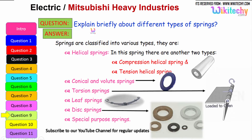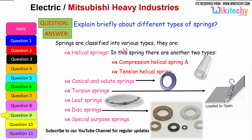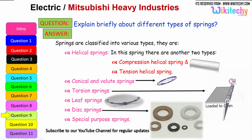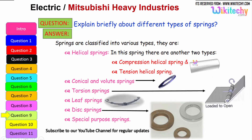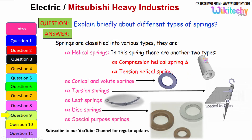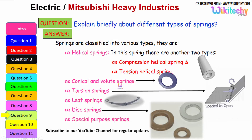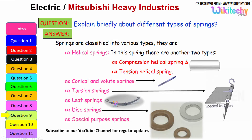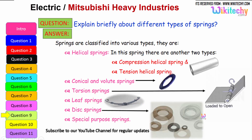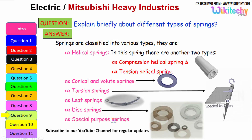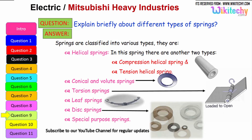Let us see briefly the different types of springs. Springs are classified into various types: the first is helical springs, which are further divided into compression helical springs and tension helical springs. The next type is conical volume springs, followed by torsion springs, leaf springs, and disc springs. There are also additional springs called special-purpose springs. These are all the different types of springs available.